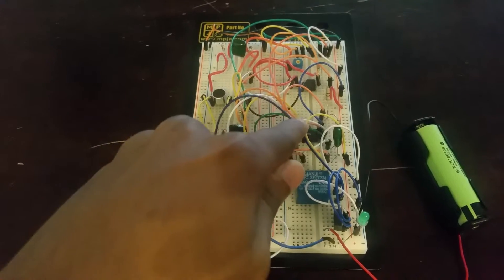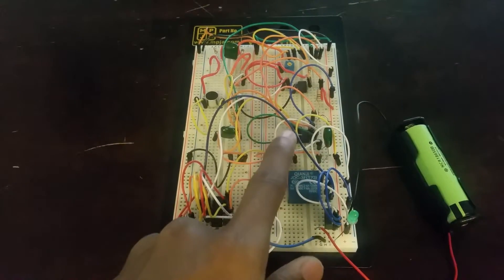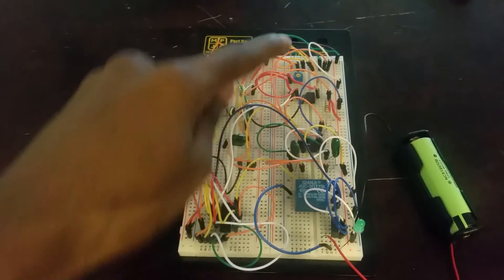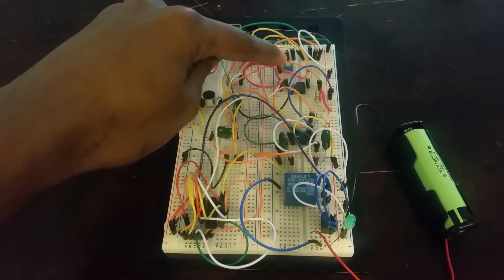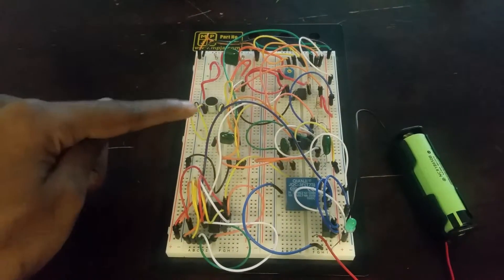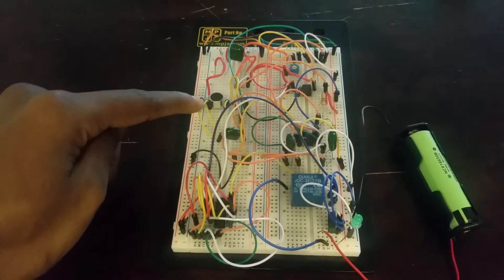This over here is the timer and the timer will count how many times the person claps. This over here is a variable resistor and it changes the sensitivity of the mic.